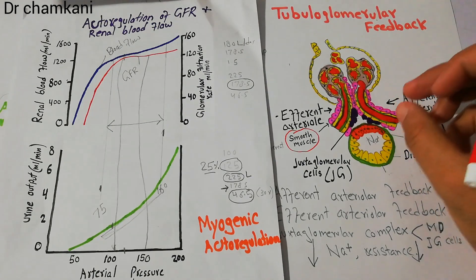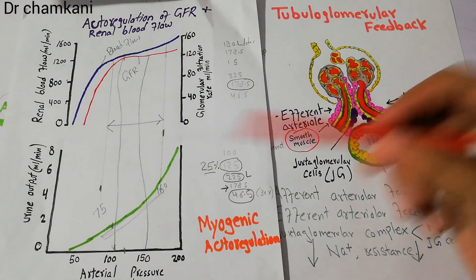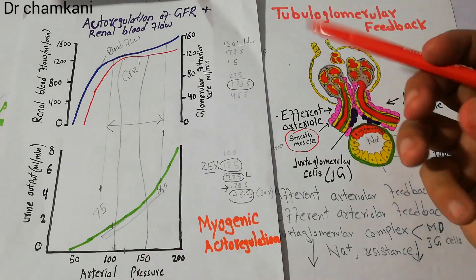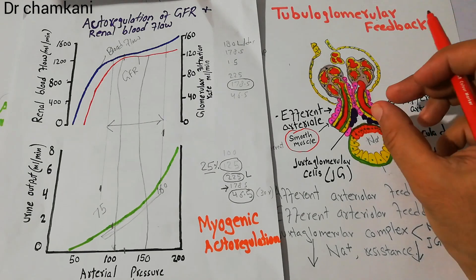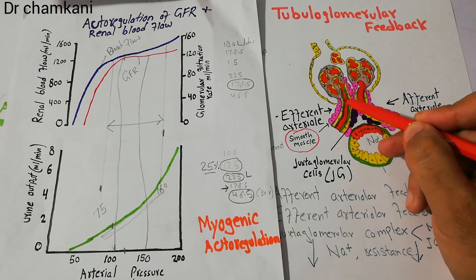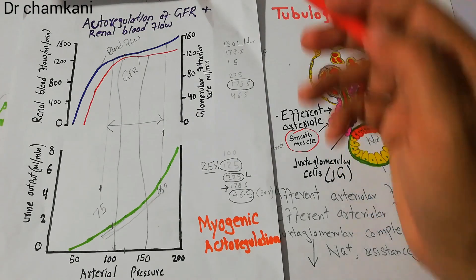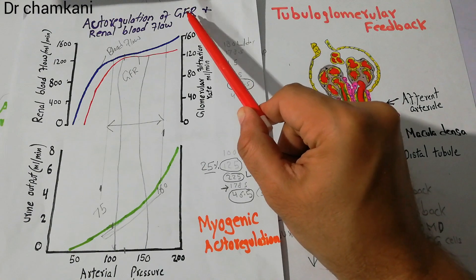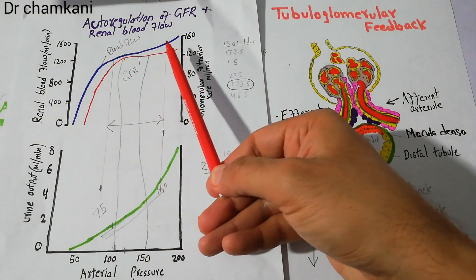The myogenic mechanism occurs at the level of the blood vessels themselves, which absorb the increase in arterial pressure by contracting whenever they are stretched due to high pressure. These smooth muscles contract, increase the resistance to blood flow, and do not allow excessive blood to enter the glomerular capillaries, thereby maintaining the level of GFR and renal blood flow and helping in the autoregulation process.